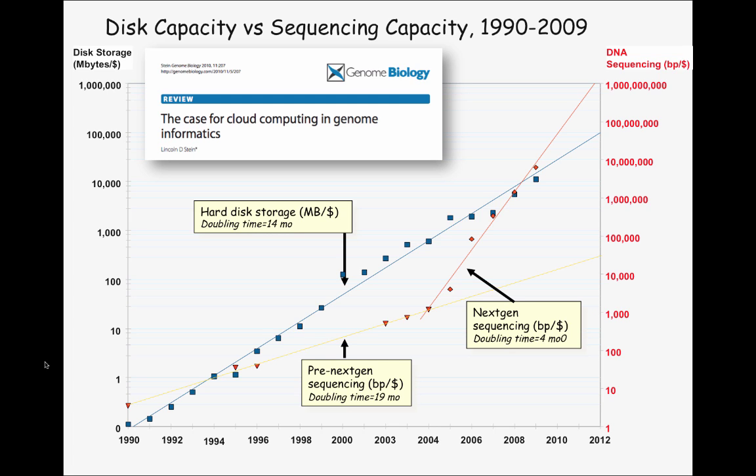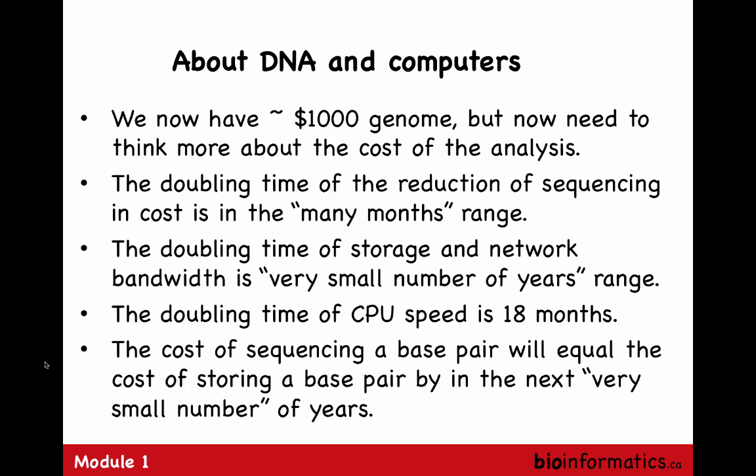Sequencing will be cheaper, and in some future point we will outpace storage — we can't store all the sequencing results. We now have about 1,000 genome projects. When we talk about cost, we need to also think about storage and how much it costs to process the data. The doubling time for reduction of sequencing cost is in the many-month range. The doubling time for storage and network bandwidth is a small number of years. The doubling time for CPU speed is about 18 months. So the cost of sequencing a base pair will equal the cost of storing a base pair in the next few years. There's always the question: do we want to store our sequencing results, or just re-sequence our sample when necessary?